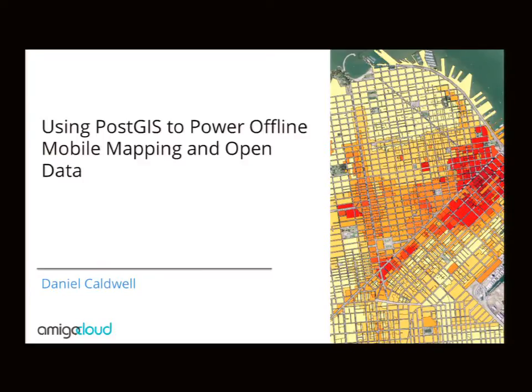My name is Daniel Caldwell. I work with Amigo Cloud — I'm the director of GIS there. This talk is "Using PostGIS to Power Offline Mobile Mapping and Open Data." We heavily use PostGIS at Amigo Cloud, and I wanted to share how we use it and how you can use Amigo Cloud to get better at PostGIS queries.